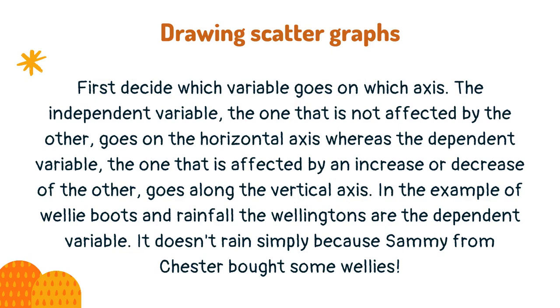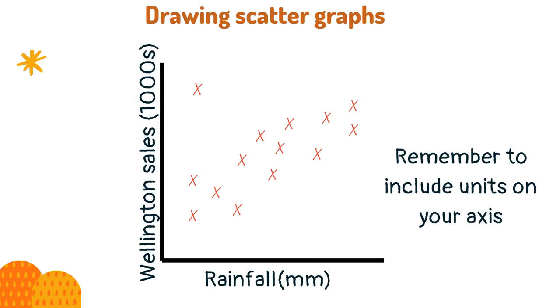In the example of welly boots and rainfall, the wellingtons are the dependent variable. It doesn't rain simply because Sammy from Chester bought some wellies. Remember to include units on your axis.